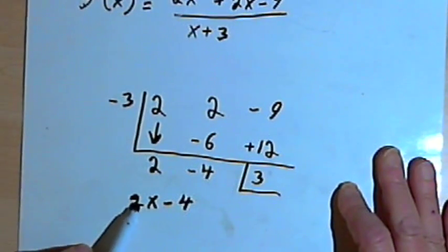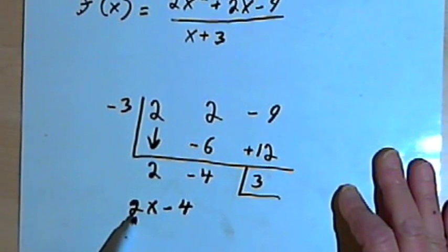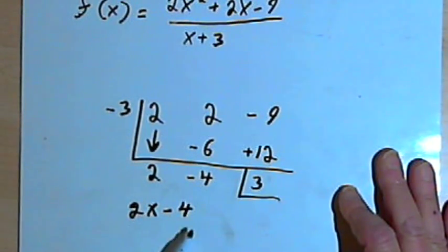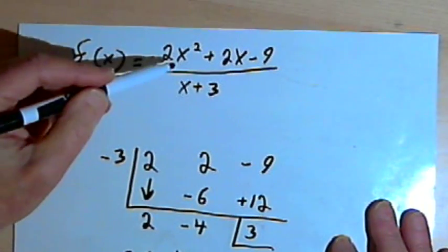So 2x minus 4 is going to be the slant asymptote, or the oblique asymptote, for this function.